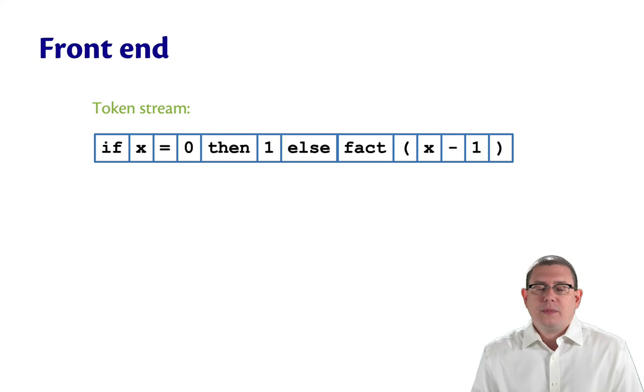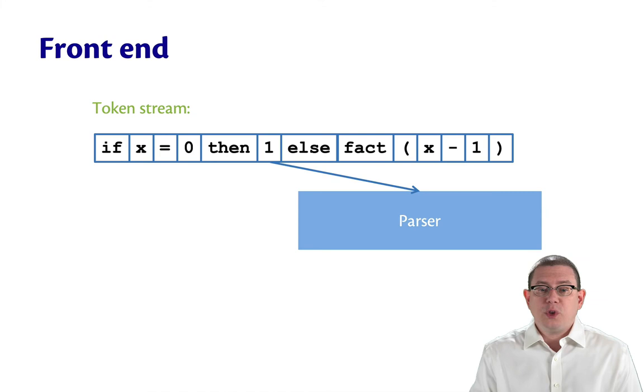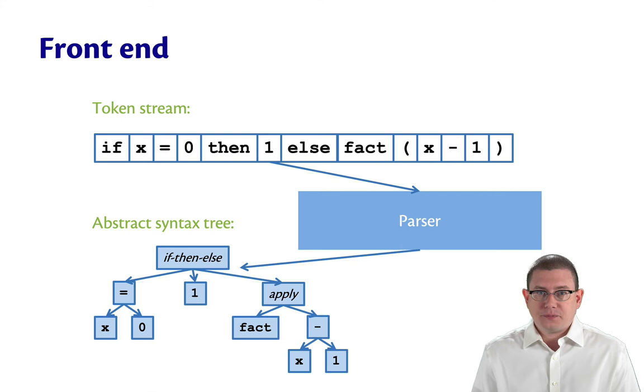The next step in the front end is to take that token stream and to run it through the parser. The parser's job, then, is to transform the token stream into an abstract syntax tree, or an AST. So this gives more structure to the data. It's a different data structure, right? We're actually producing a tree data structure out of a list data structure with the parser.